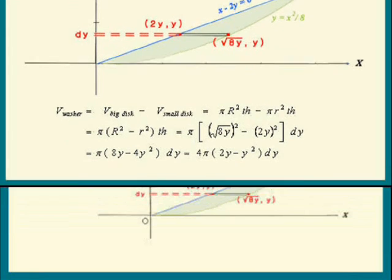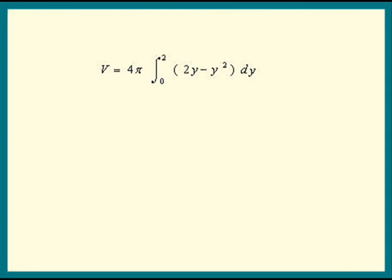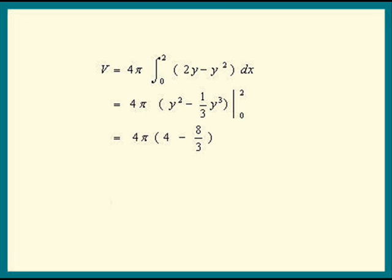The total volume is the sum of all these washers. y moves from 0 to 2, so now we can integrate. Integrating the first term we get y squared; integrating the second term we get y cubed over 3. Plugging in the upper limit 2, we get 4 pi times (4 minus 8 over 3). Factoring out 4, we get 16 pi times (1 minus 2 thirds), and the answer is 16 pi over 3.